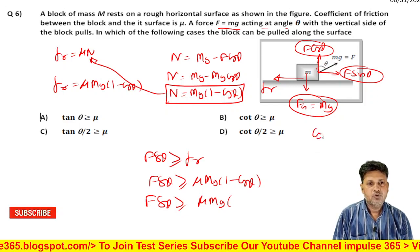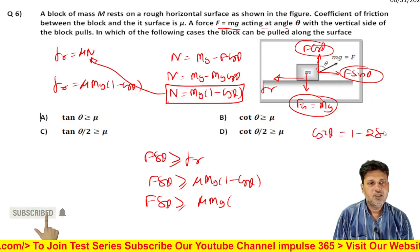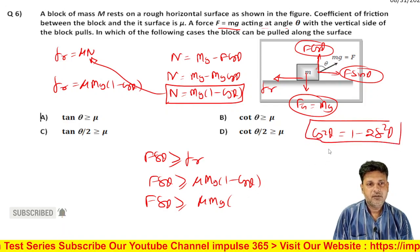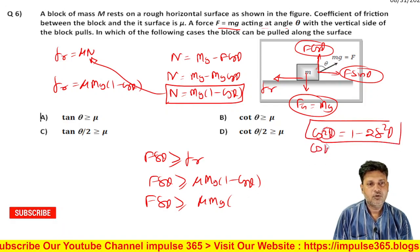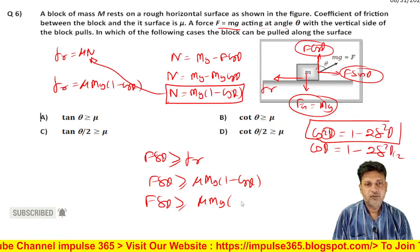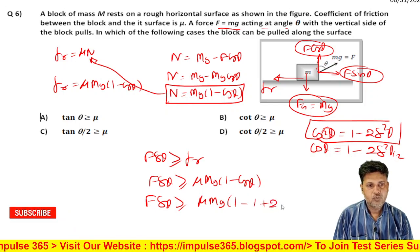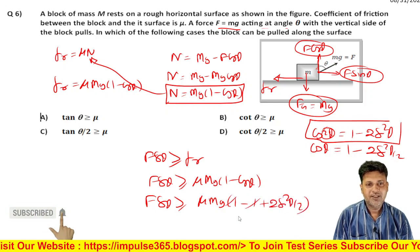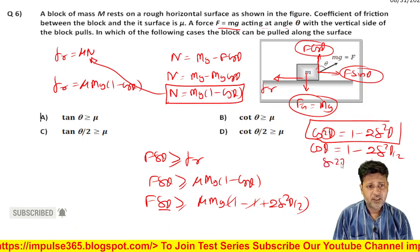Now applying the trigonometric identity: cos 2 theta equals 1 minus 2 sin squared theta. So 1 minus cos theta equals 2 sin squared (theta by 2). Substituting, we get: 1 minus (1 minus 2 sin squared theta by 2), which simplifies using the half-angle form.